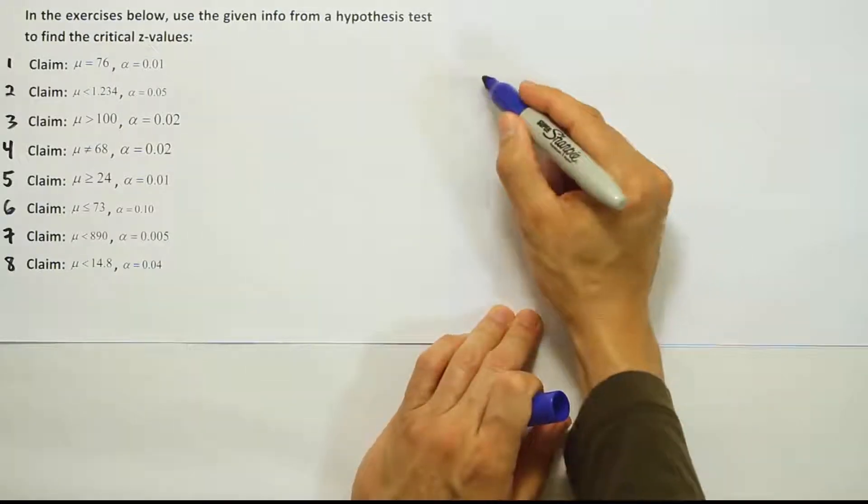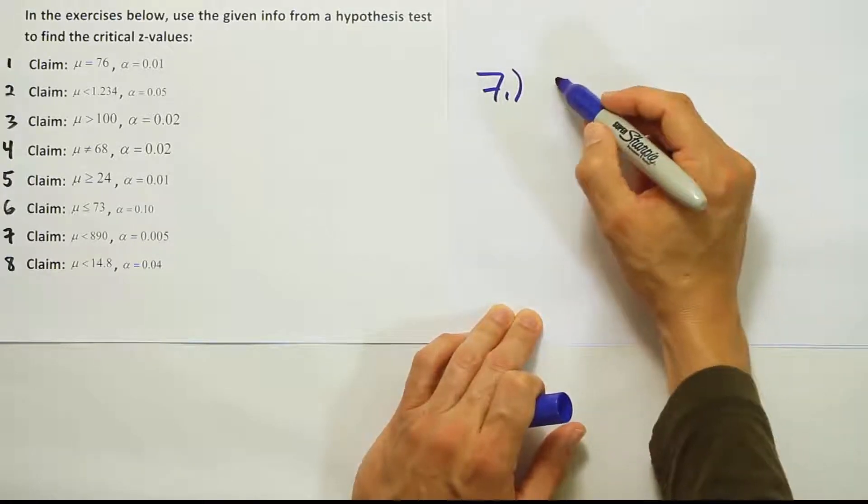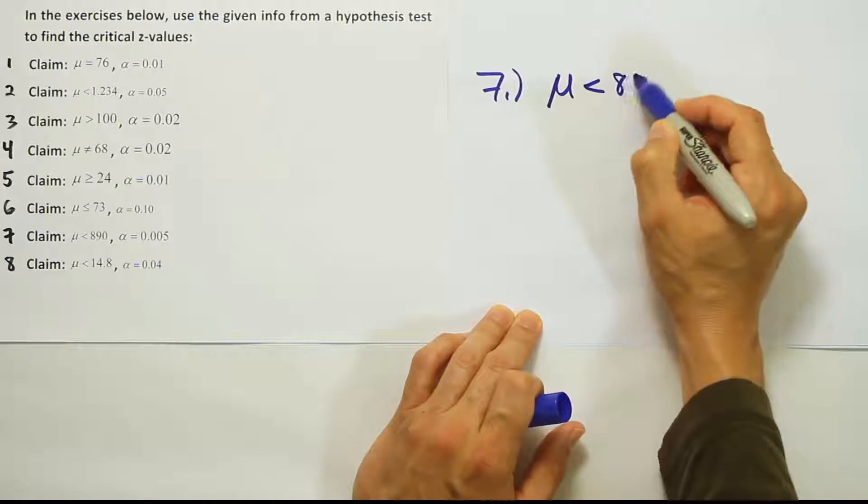Okay, so now we're doing problem number 7 in this list of problems. We're given that the claim is that the mean is less than 890.